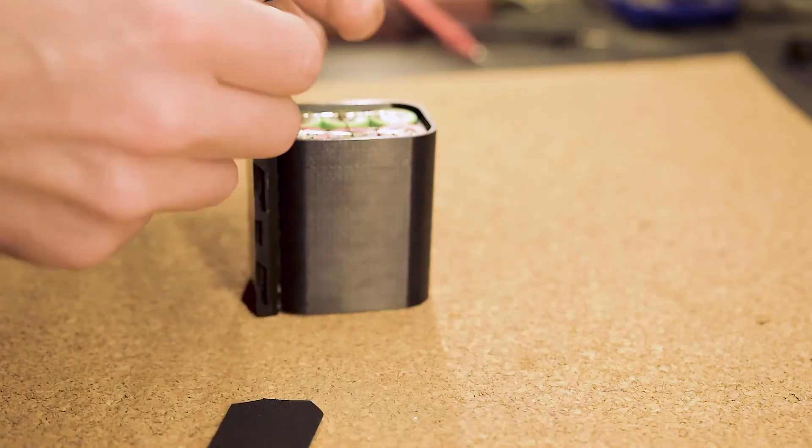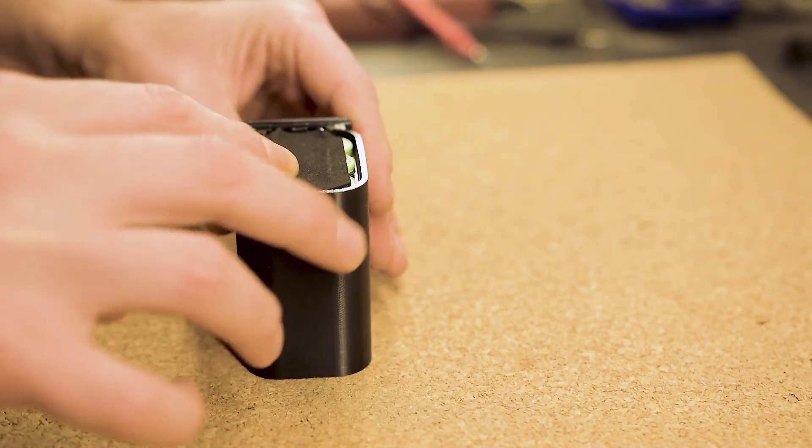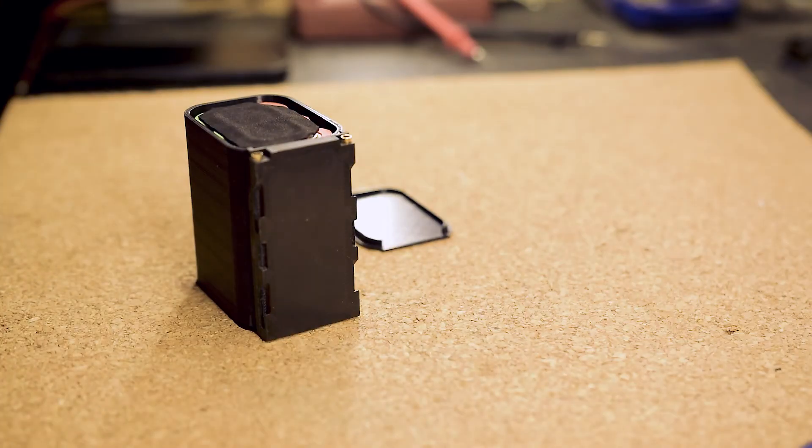For protection, we put some sticky sponge rubber over the contacts of the cells. And then, we finally glue the side covers to the case.